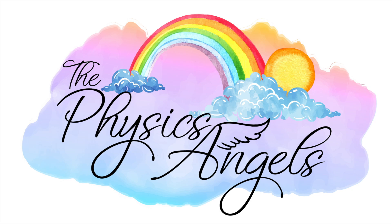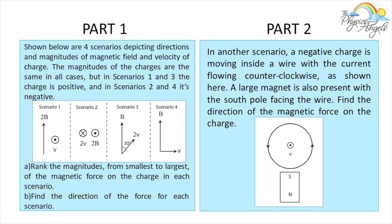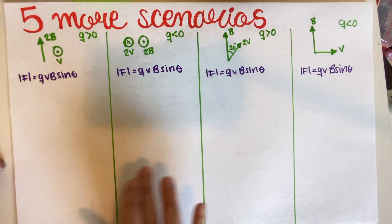Hello everybody, welcome back to our channel. In this episode we're going to be solving a Physics 7C practice problem on the topic of magnetic fields and forces. As usual, if you're finding this content helpful please make sure to leave a like — it really helps our channel. So this is the problem we're going to be working on today. For the first part we have four scenarios with the depicted directions and magnitudes of the magnetic field and the velocity of the charge.